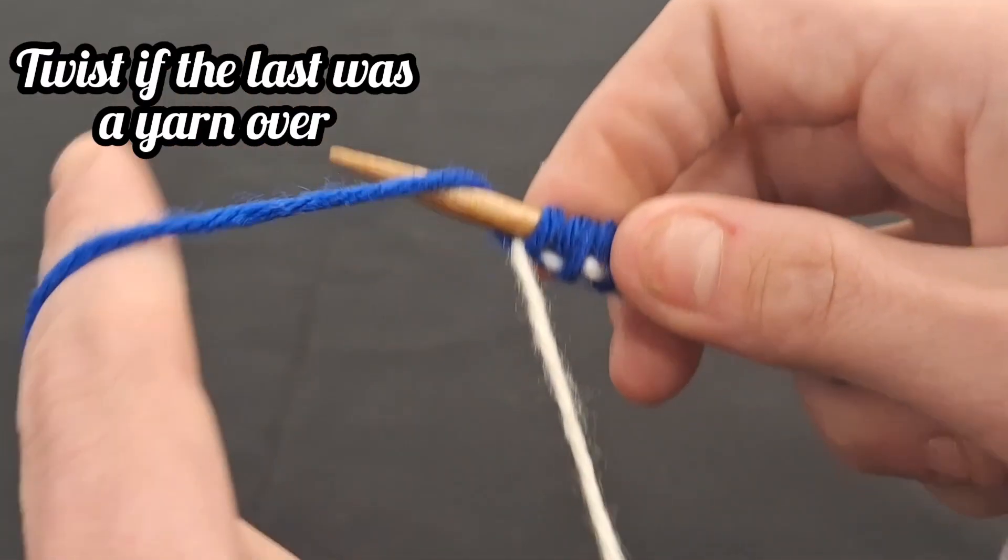Provisional crochet cast on number one. This one is easily removed by simply pulling on the scrap yarn, essentially unraveling the crocheted stitches. Do this slowly so as to minimize dropped stitches or unraveling. You will need a crochet hook alongside your knitting needles to perform this method. Place your slipknot onto the crochet hook. Mind you, this will not count as a stitch.